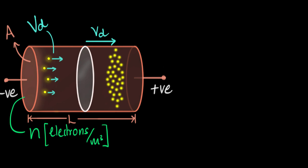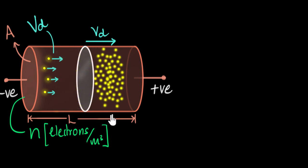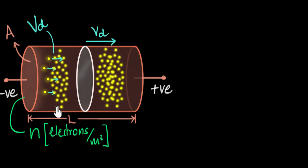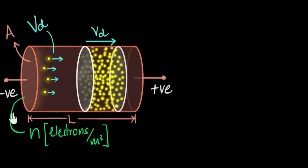In that same time, there were some electrons which were a little bit further left — they too went through that area and maybe ended up somewhere over here. And similarly, there were some other electrons a little bit further to the left — they too went through it and ended up on the other side. So what this means is all the electrons you find in this tiny cylindrical volume must have passed through this area in one second.